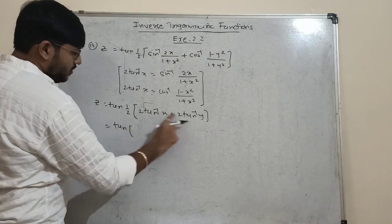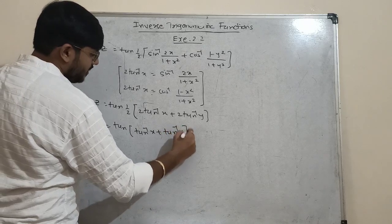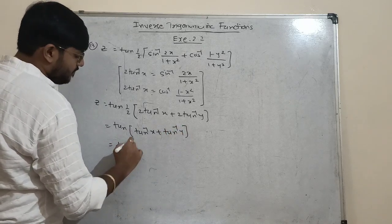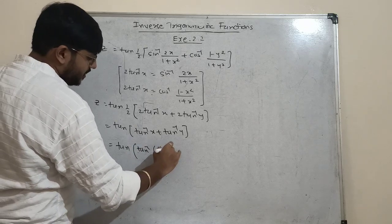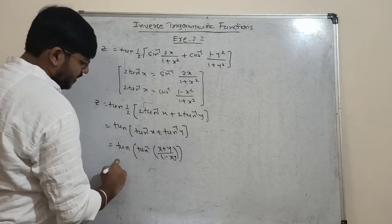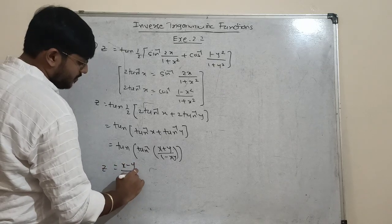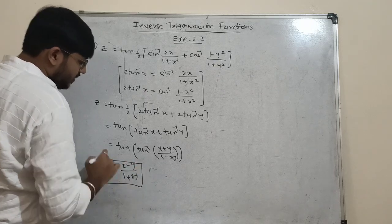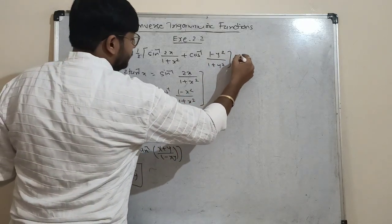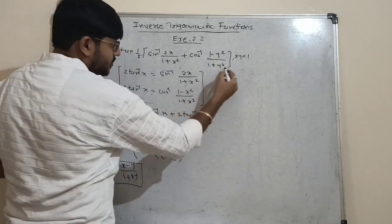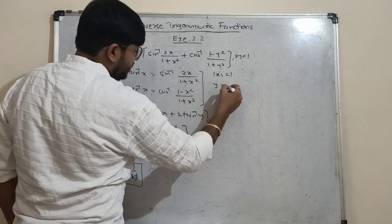Then the 2 and the half cancel, giving tan(tan⁻¹x + tan⁻¹y). Apply the addition formula: tan⁻¹((x+y)/(1-xy)), and the inverse function cancels, so the answer is (x+y)/(1-xy). It is given that xy < 1.